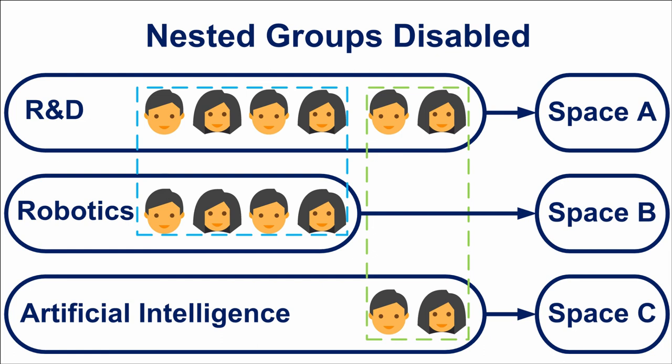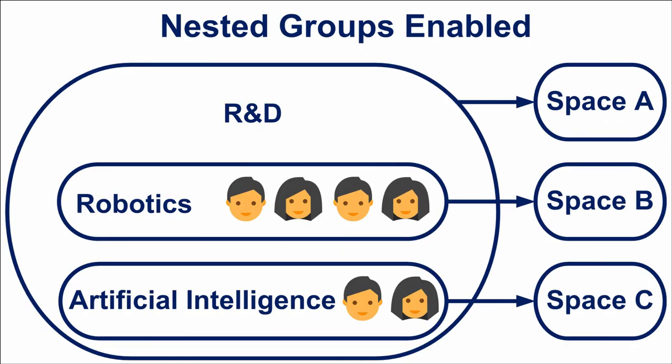This is done manually by the administrator and can lead to mistakes due to human error. To simplify this, we can use nested groups: we specify Robotics and Artificial Intelligence as nested within the R&D group. After that, all members of the project groups will automatically be considered R&D members, and the corresponding permissions will be given automatically. Note that the nested groups feature must be enabled in Crowd itself in the corresponding directory.